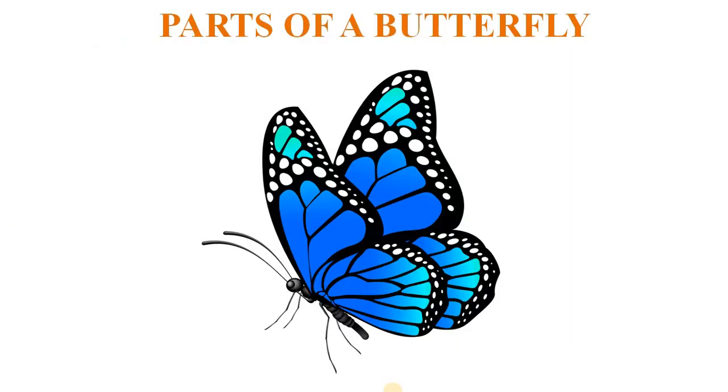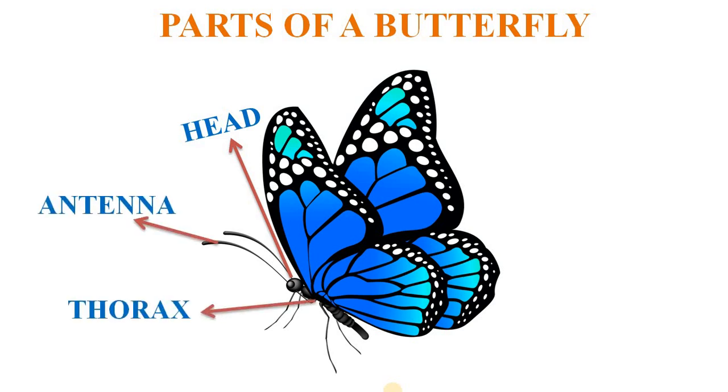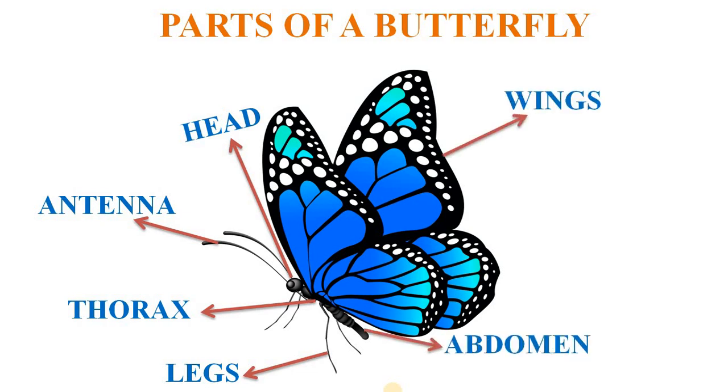This is a butterfly. It has head, antenna, thorax, legs, abdomen, wings, etc. So we have learnt the story. Now it's time to check your knowledge and understanding. Come to the comprehension questions.